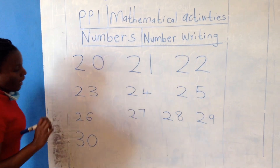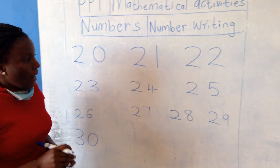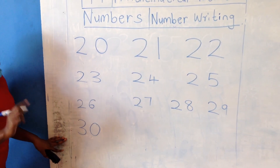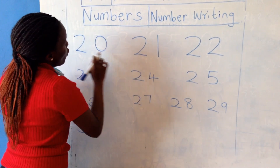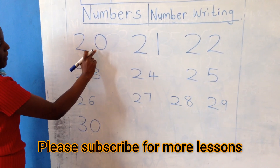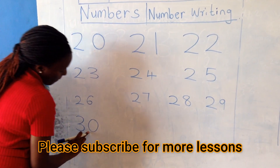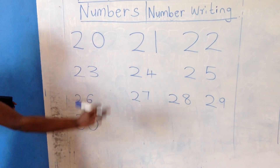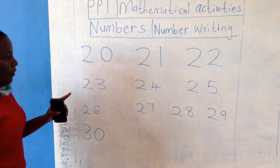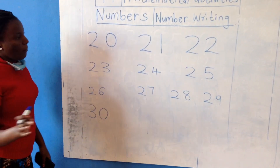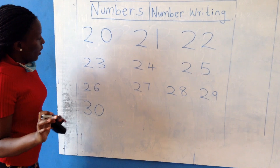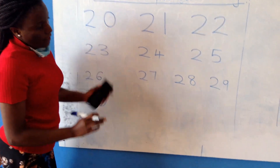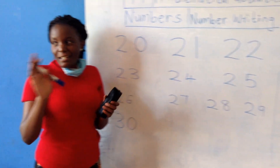For your homework, you will write number one up to number twenty. Then you will copy from number twenty up to number thirty in your books. You will read them — read them for your mommy, your sister, or your brother. If you cannot identify any of these numbers, please ask for their assistance. Until next time. Bye.